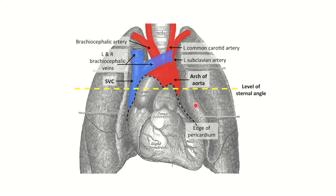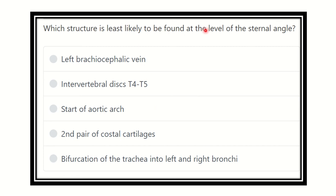Welcome to another question and answer session for immersive exam. The question asks: which structure is least likely to be found at the level of the external angle? The external angle, also known as the angle of Louis, is where the second costal cartilage attaches. The options are: left brachycephalic vein, intervertebral disc between thoracic 4 and thoracic 5, the start of the arch of aorta, second pair of costal cartilage, and bifurcation of the trachea into the left and right bronchus.